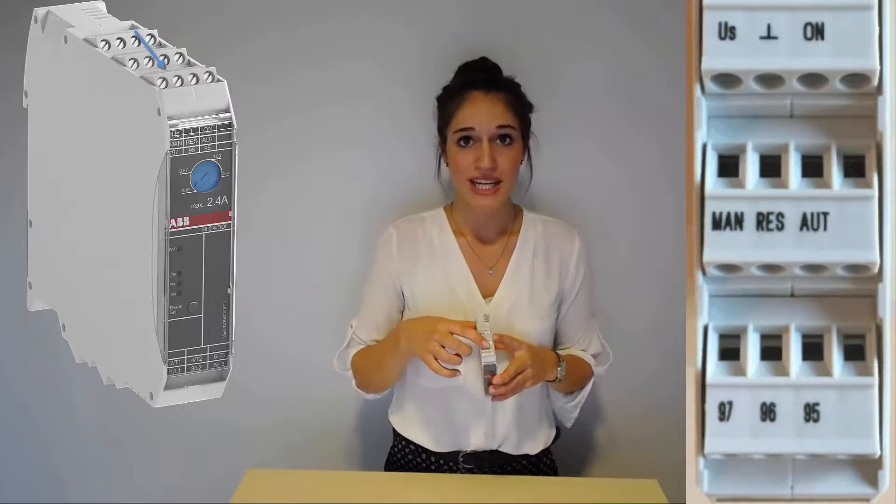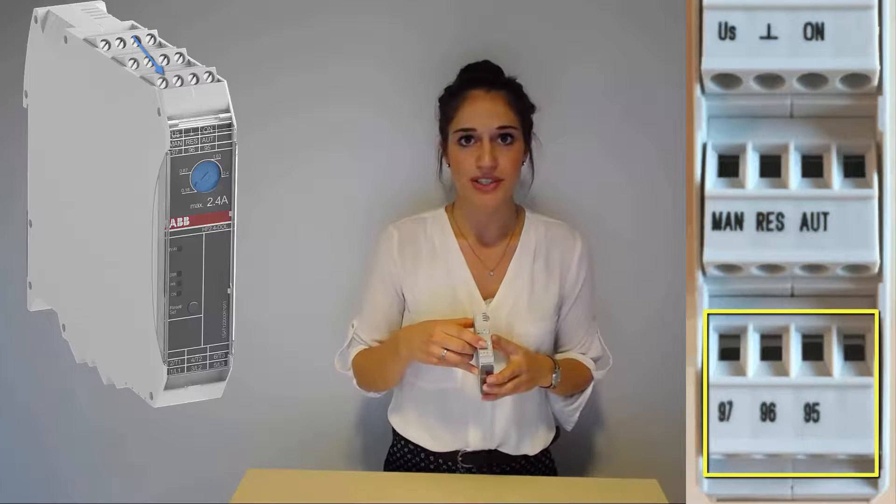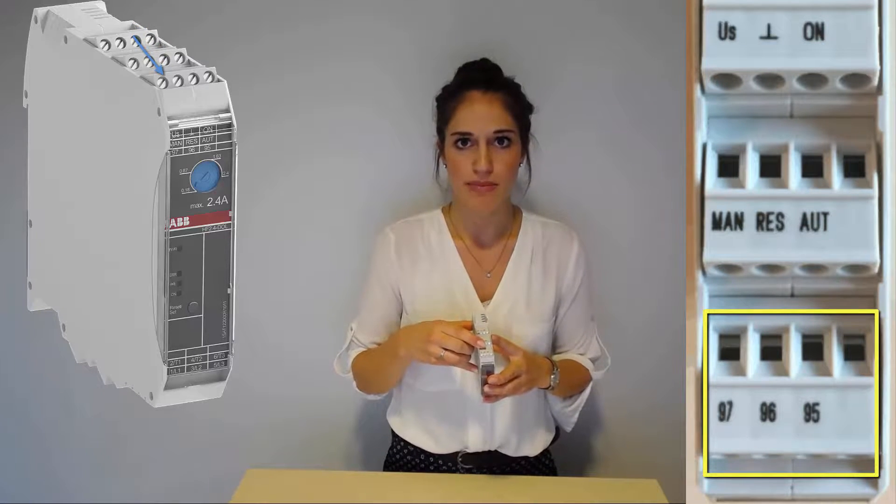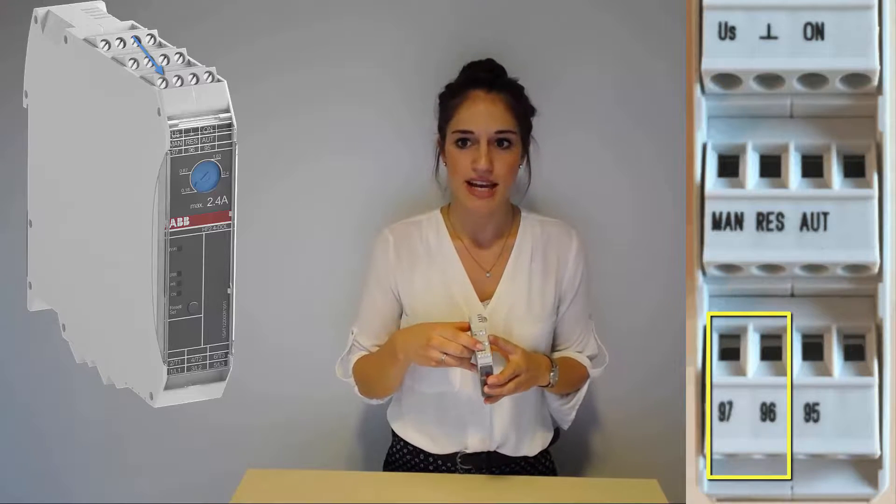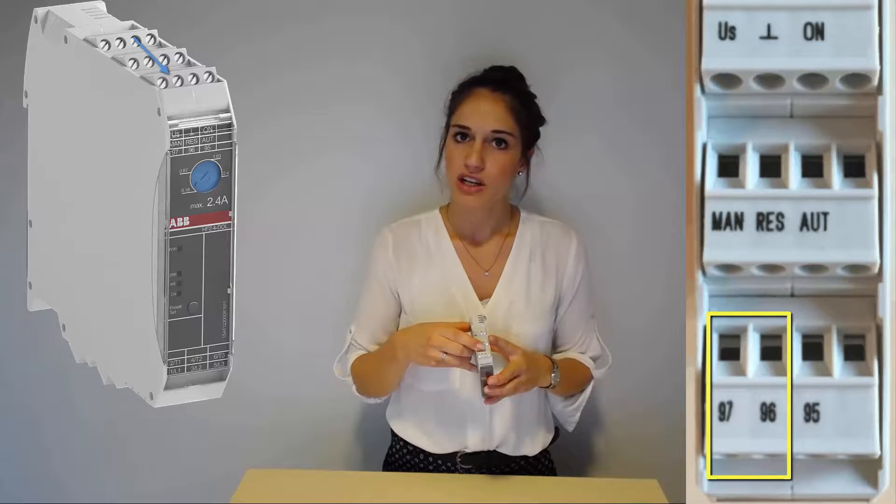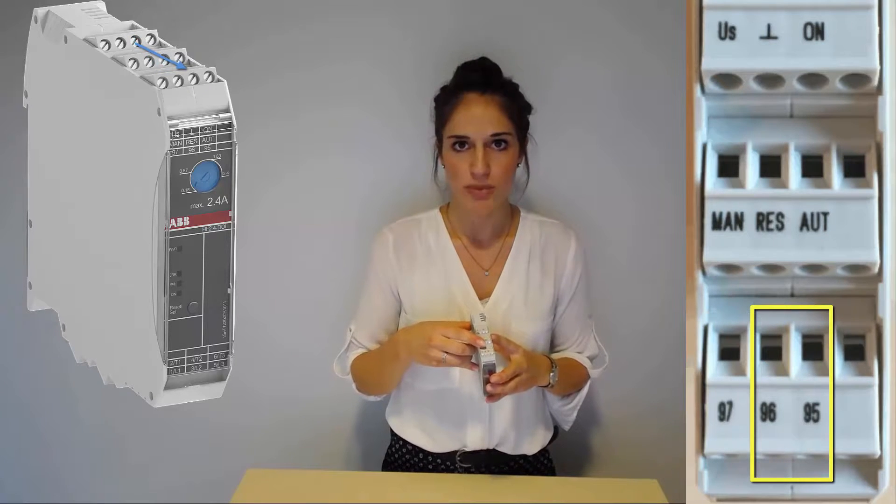The signal relay is activated as soon as the electronic compact starter detects an error or indicates a message. The normally open contact between terminals 96 and 97 is closed and the normally closed contact between terminals 95 and 96 is opened.